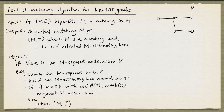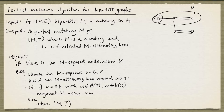Let's run this algorithm on an example. Here is my graph, and we are going to start with the matching edges shown in double line. I am going to start growing my tree at this M-exposed node. Recall that we have to find a pair of edges Uv, Vw such that U is in the even set, Vw is a matching edge, and add them to the tree. And here we can add this pair.